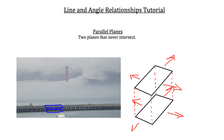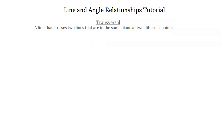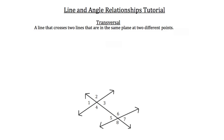So that's parallel planes. Now that we've discussed lines and planes, let's talk about the angle relationships that form from lines. First, let's talk about a transversal line. A transversal is a line that crosses two lines in the same plane at two different points. Here we have line one, line two, and the transversal T. The transversal is cutting across those two lines, creating eight different angles, which we've labeled one through eight.